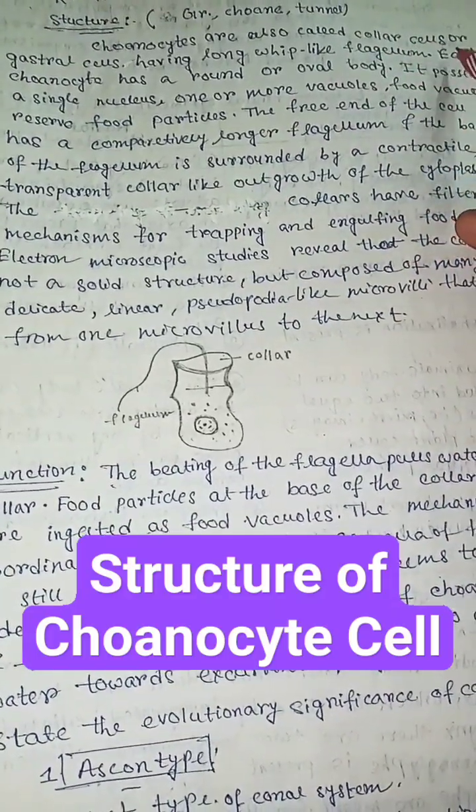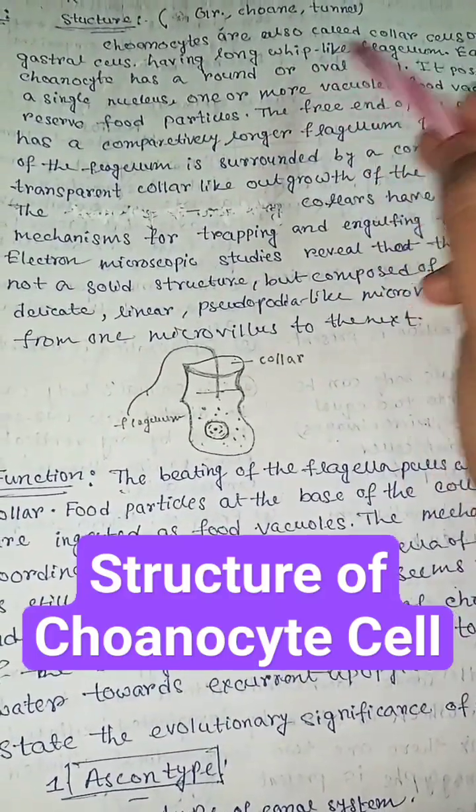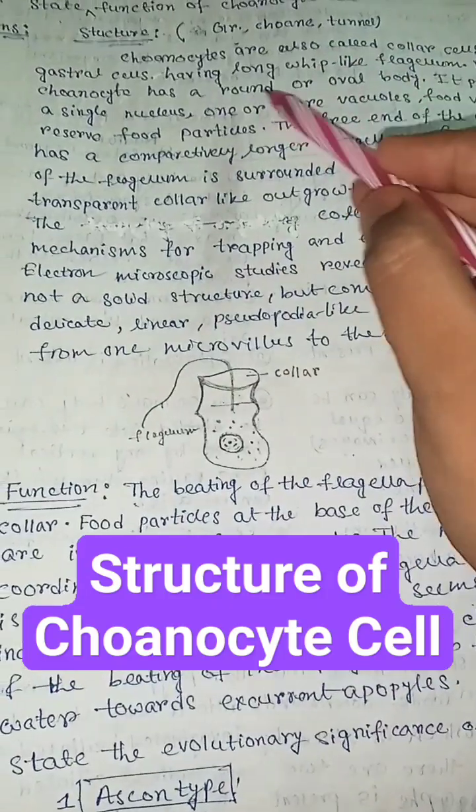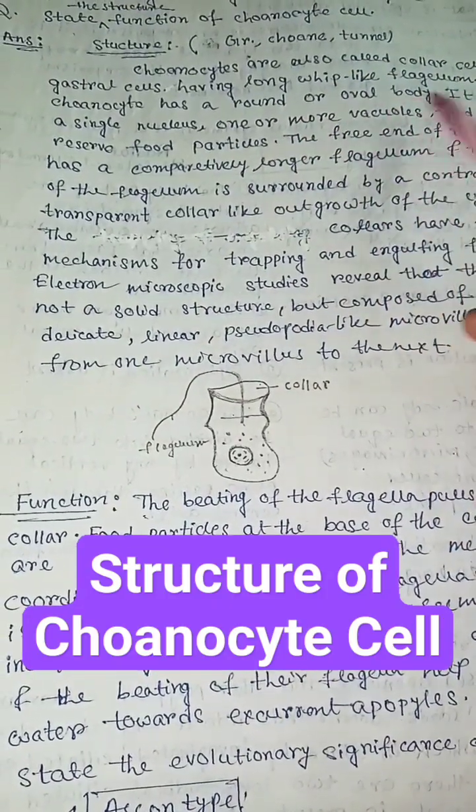Choanocytes are also called collar cells or gastral cells having long whip-like flagellum. Each choanocyte has a round or oval body.